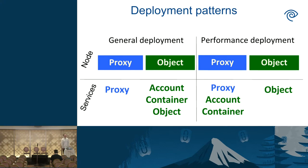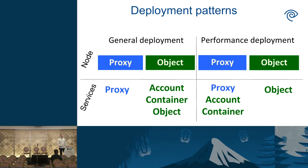I start off by describing some deployment patterns and then step through a few other sections that will build out a complete deployment. This all assumes you have what I'd call a base node profile — something on your nodes that provides package repos, IPMI tools, kdump, network configuration, general sysadmin-type stuff. From there, Swift can be pieced together in two main patterns. The first is a general deployment pattern where your proxy node runs just proxy services and the object node runs account, container, and object services. The second is a performance deployment pattern, maybe for a situation where you have many small objects and container lookups are slow — you'd move account and container servers over to the proxy node and host them on an SSD drive.